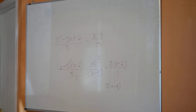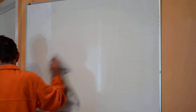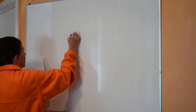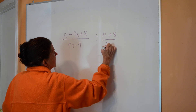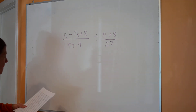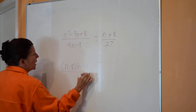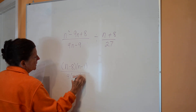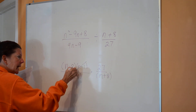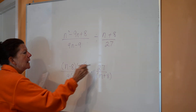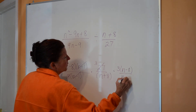Now you try one — pause and come back. The numerator factors into (n−8)(n−1). On the bottom, factor out the 9. Flip the second fraction: 27 goes on top, (n+8) on the bottom. Cancel (n−1) and (n−1) completely, and 27/9 reduces to 3. The answer is 3(n−8) over (n+8).